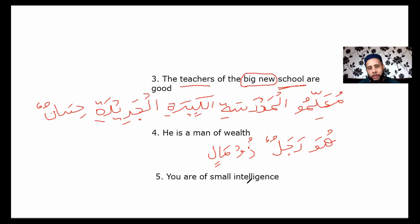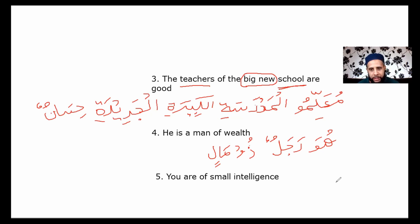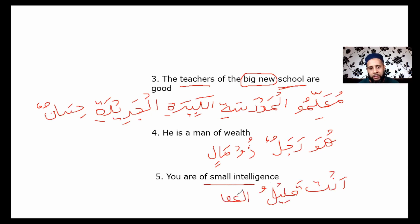Question 5: you are of small intelligence. This should be simple if you understood the previous video. I always recommend that students watch and revise the lesson again and again until they embed it in their head, because if you know the rules from the last video, this should be very easy. أنت means you. Small of intelligence can be قليل العقل — قليل means little, عقل means intellect — so أنتَ قليلُ العقلِ, meaning you are little of intellect.